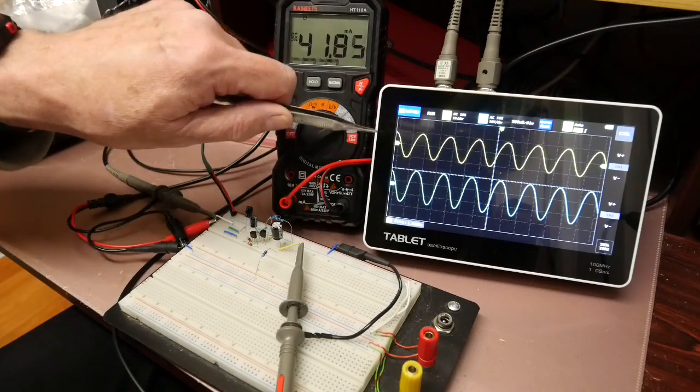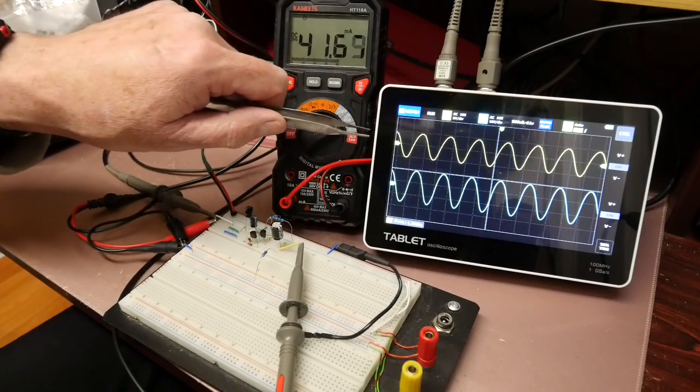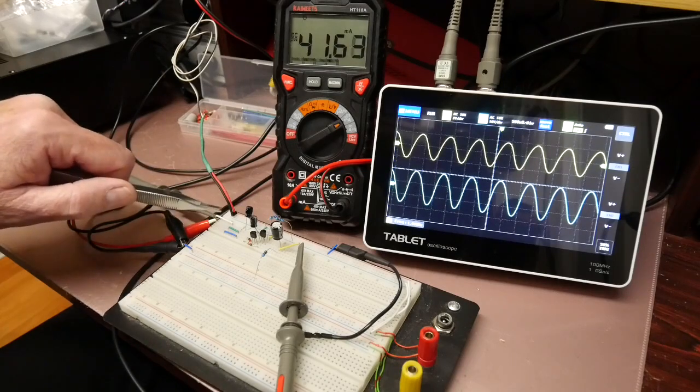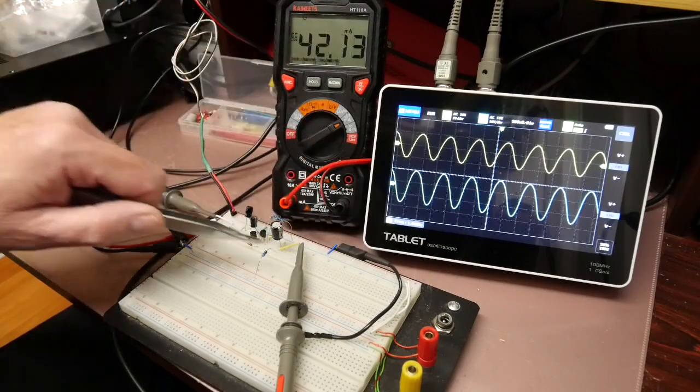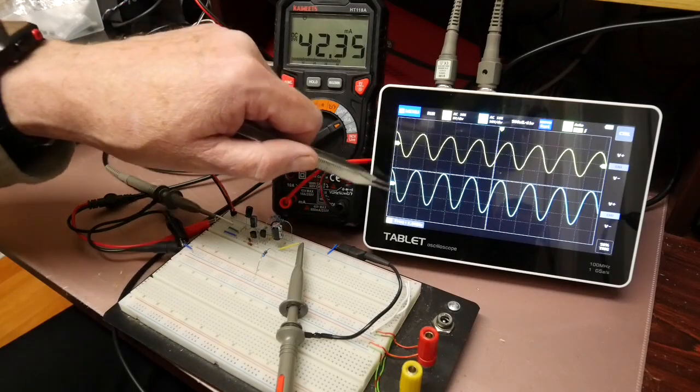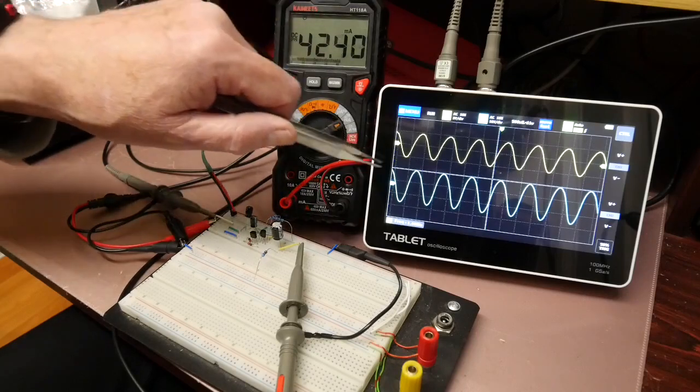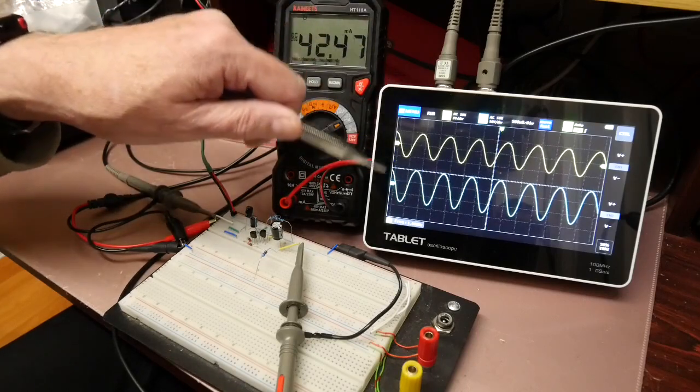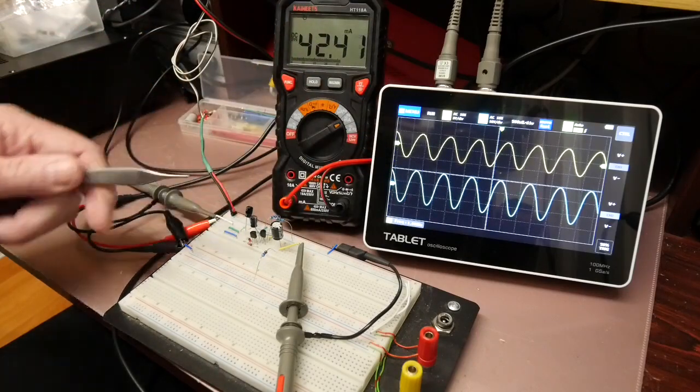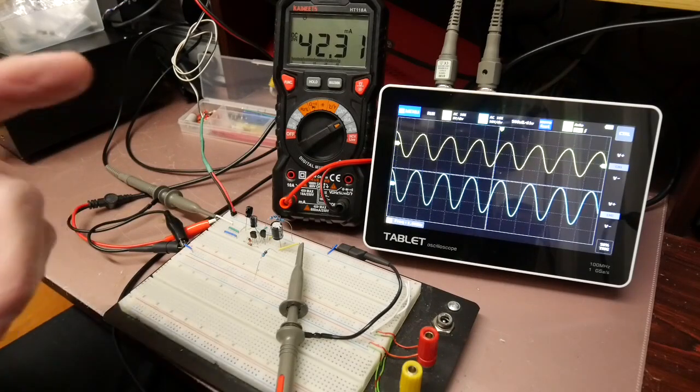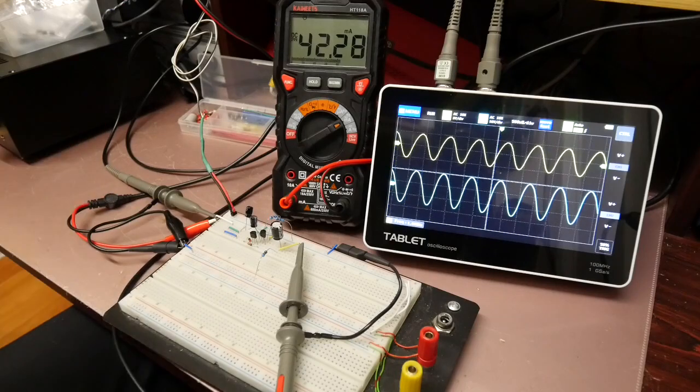The yellow trace on the scope is the one kilohertz signal on probe one here which is the input and the blue trace is the same one kilohertz signal on the output. I've got slightly different scales because obviously there's amplification going on but we're not particularly interested in the amplification right now, we're interested in the various effects on the circuit.